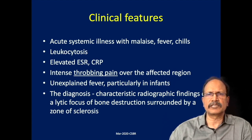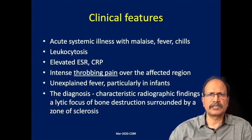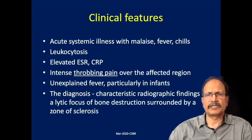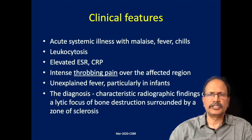Acute Osteomyelitis is an illness associated with fever, chills, and malaise. There may be leukocytosis and other evidence of acute inflammation like raised ESR and raised CRP. The typical description of throbbing pain over the affected area is characteristic of acute osteomyelitis. There may not be any X-ray findings, but if you drill that area, pus will jet out.